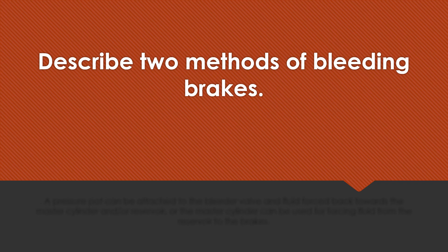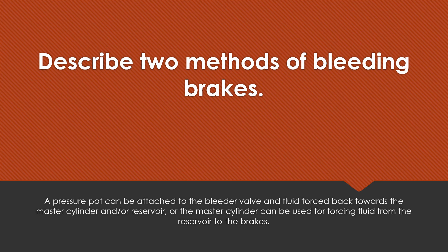Describe two methods of bleeding brakes. A pressure pot can be attached to the bleeder valve and fluid forced back through the master cylinder or reservoir. Or the master cylinder can be used by forcing fluid from the reservoir to the brakes. These are also known as the bottom-up and top-down methods.